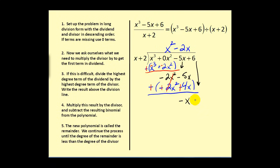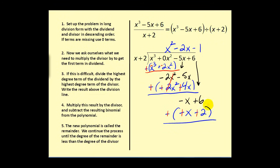Bring down the last term — so this is the last cycle. We ask that question one more time: what times x would give us negative x? That would be negative 1. Multiplying by the divisor, we have negative x minus 2. We subtract this by adding the opposite — change the sign to addition and change both signs. Our remainder will be 8. Since it's positive 8, we write plus 8 over the divisor of x plus 2. This is our final quotient.